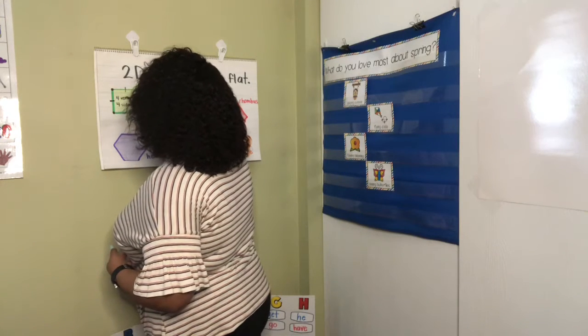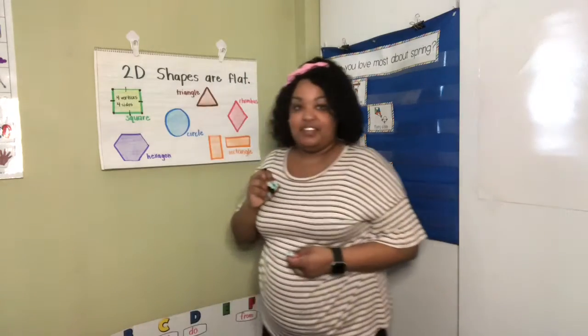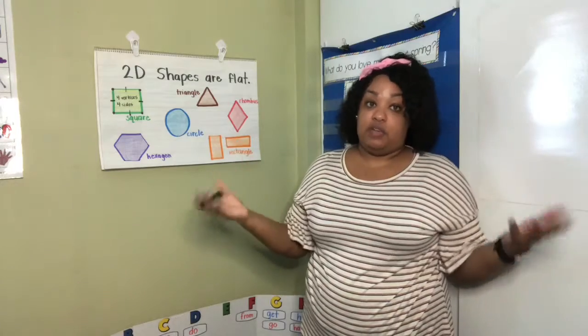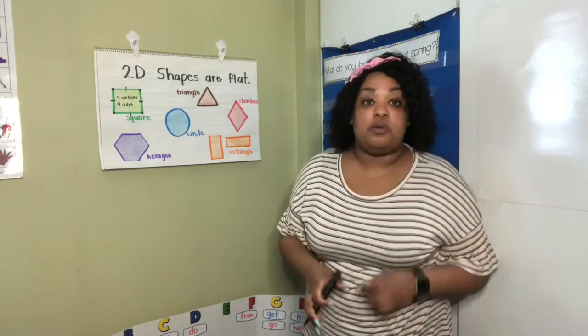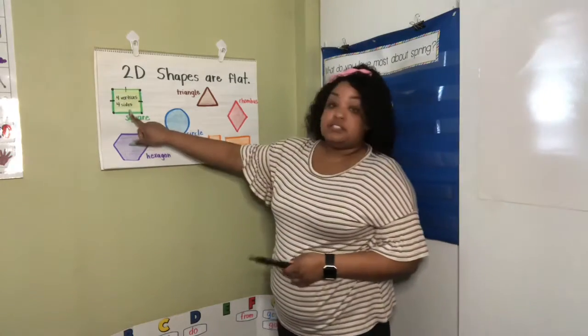We also call vertices corners. But remember, we're working on first grade vocabulary and they use the word vertices and not corners. So, this is a square.